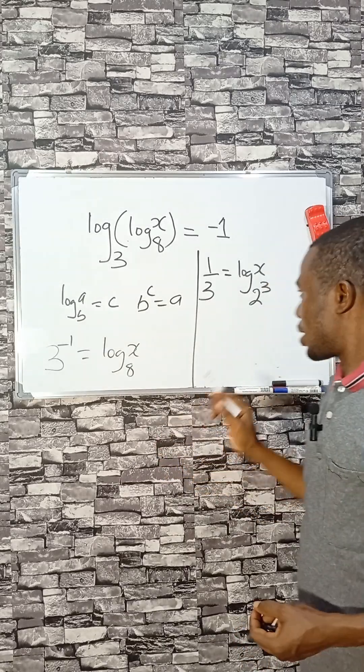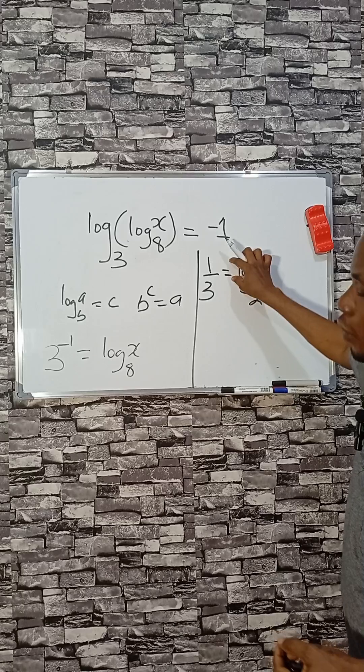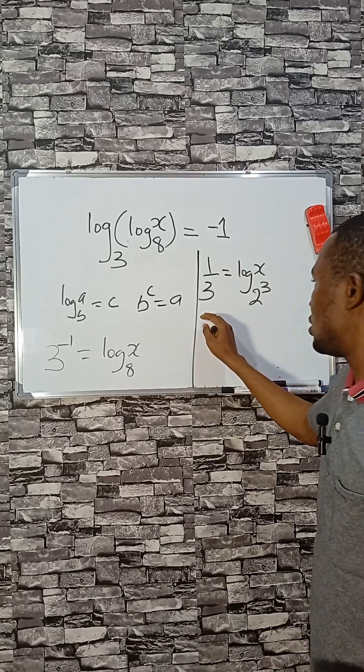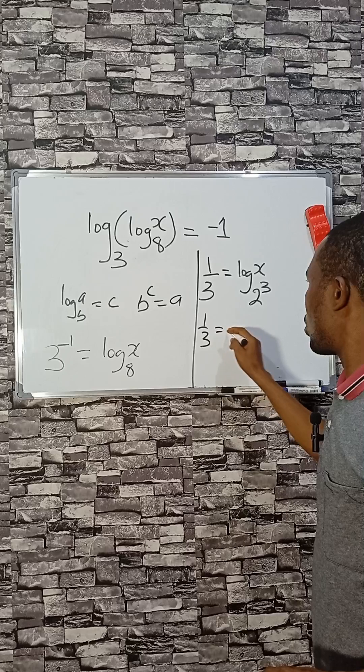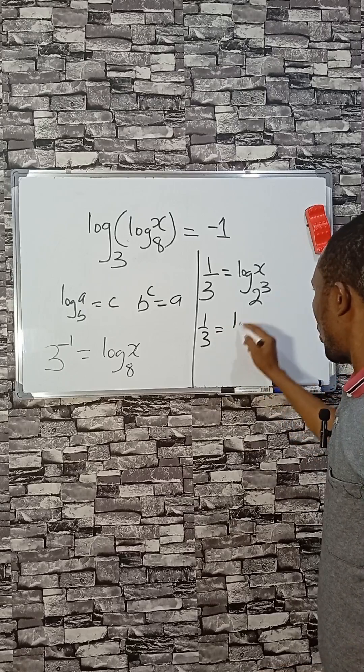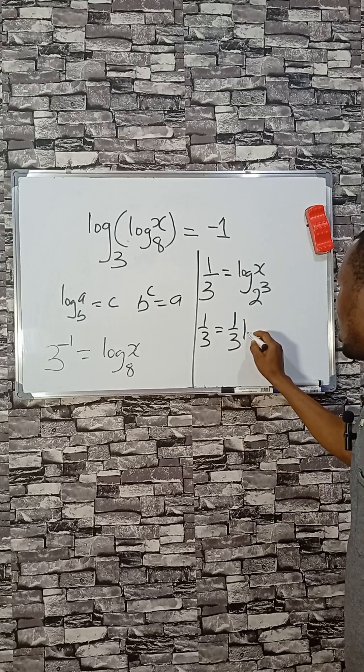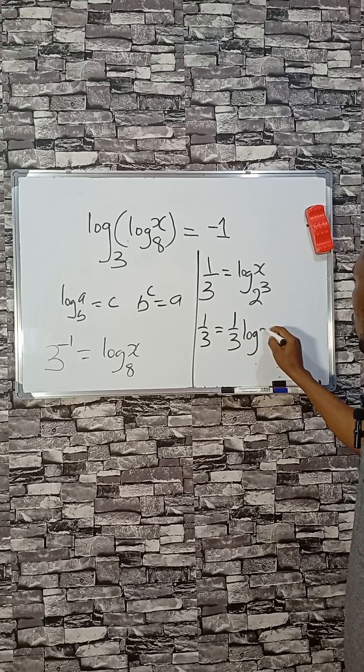Another property says that we will take the power of the base to the back of the log. So 1 over 3 equals 1 over 3 log X base 2, where the power of the base is taken to the back.